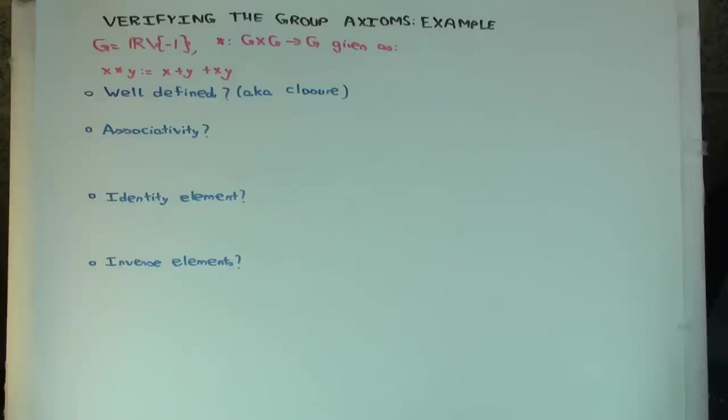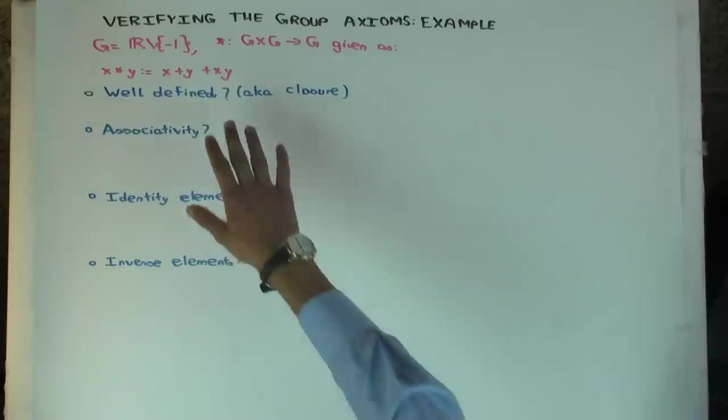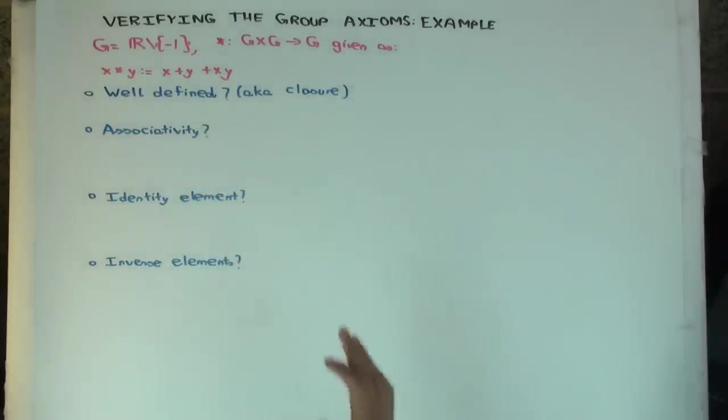So what's 2 star 3? 11. Okay, good. We know the operation. Now the first thing we want to check is, does this give a binary operation from G cross G to G? This is the same as taking closure.